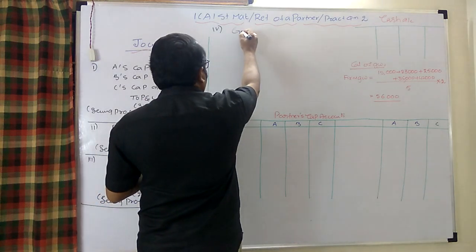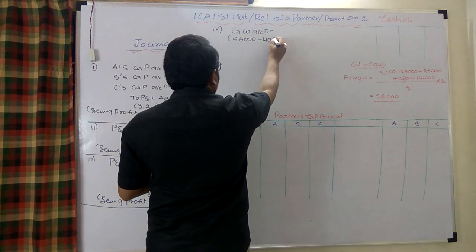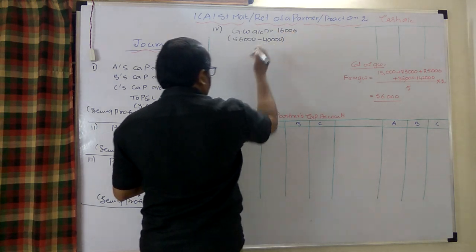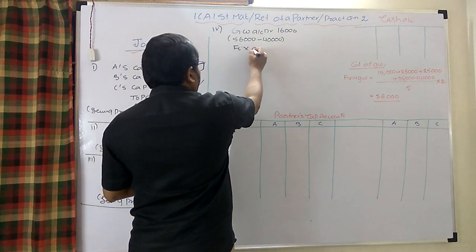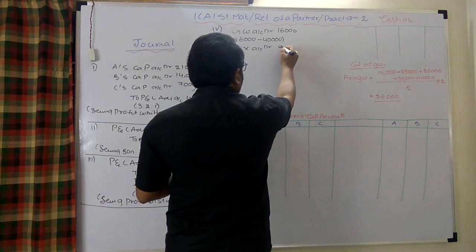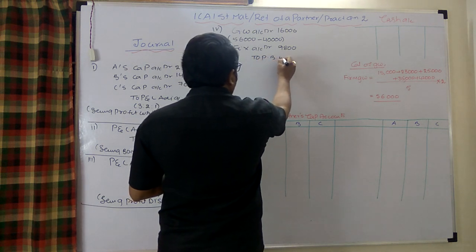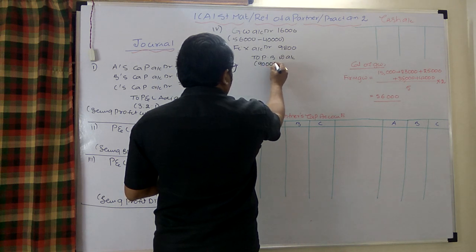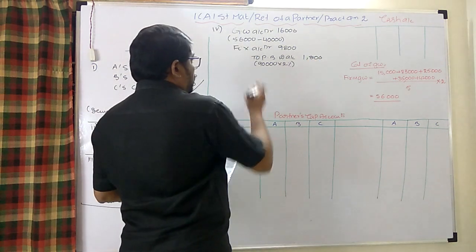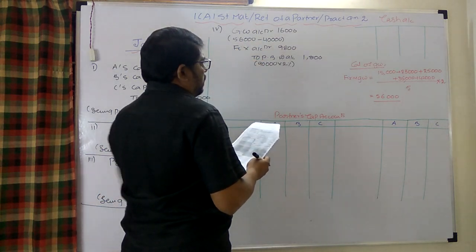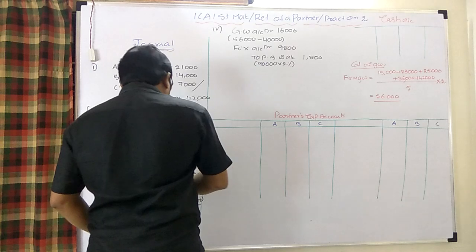Goodwill account is debited at 56,000 in brackets — earlier 40,000, increase by 16,000 — since 40,000 is already in their capitals. Fixtures account debit 9,800. Provision for bad debts credit 1,800 (90,000 × 2% = 1,800). The net gain is to be distributed to A, B, C in ratio 2:3:1.